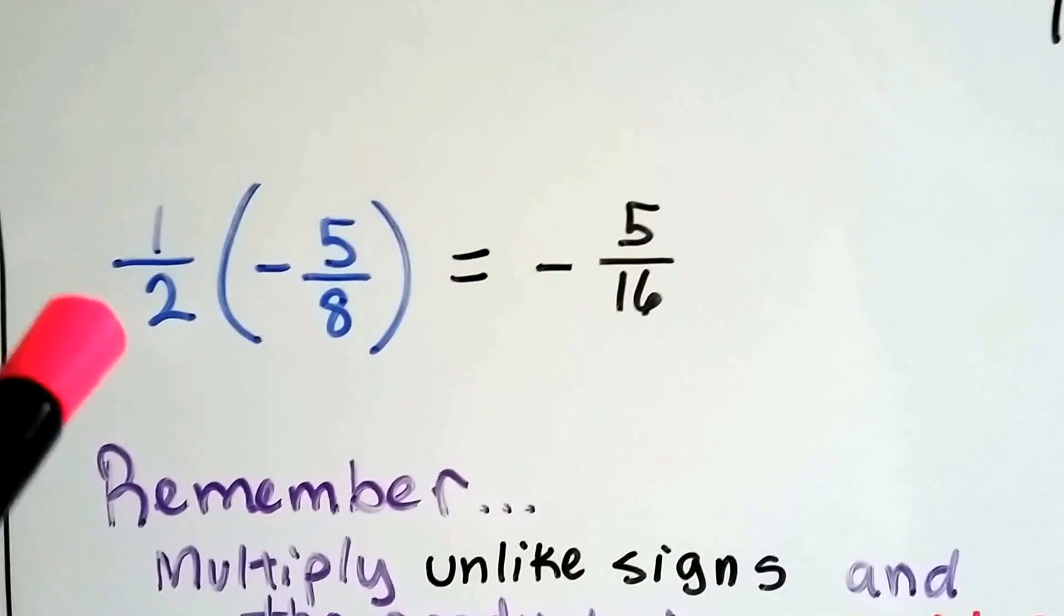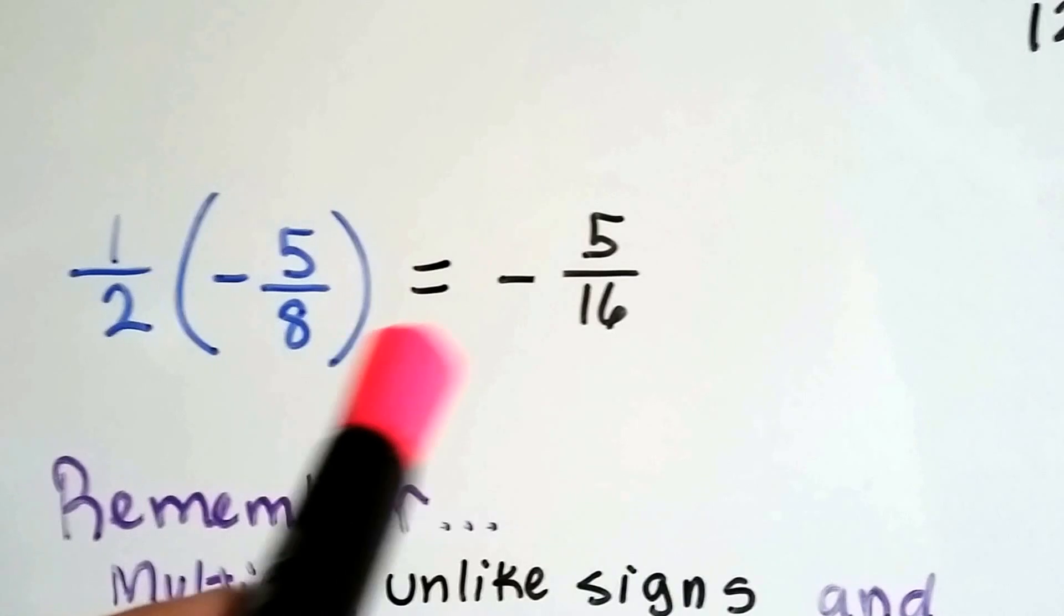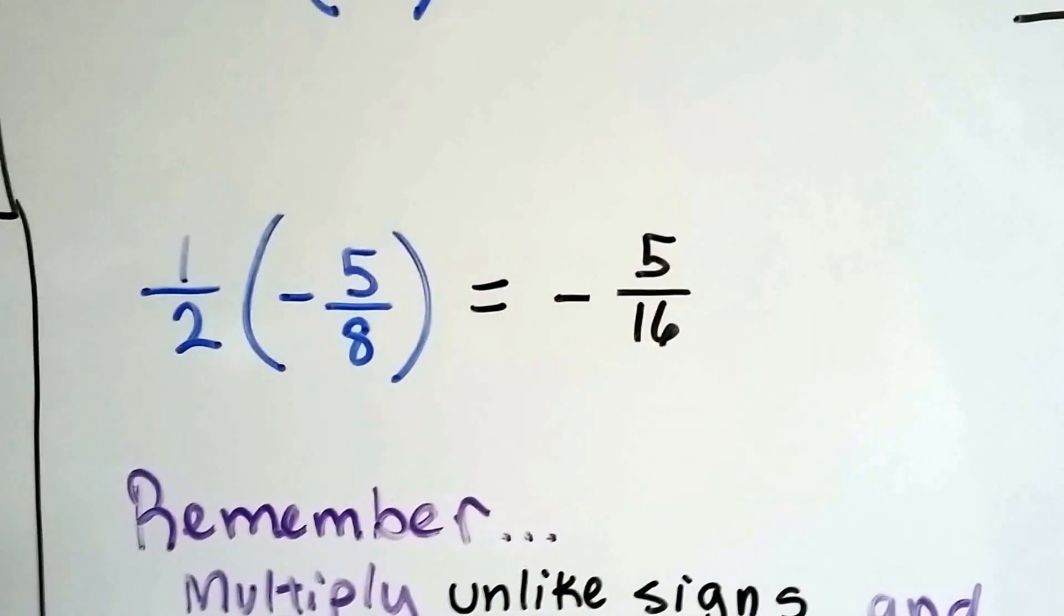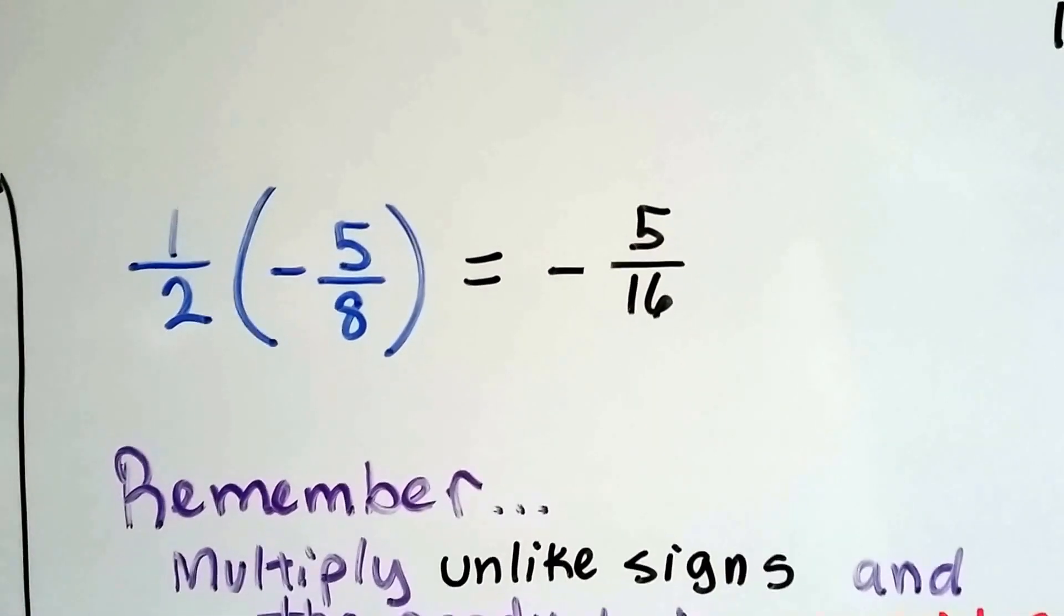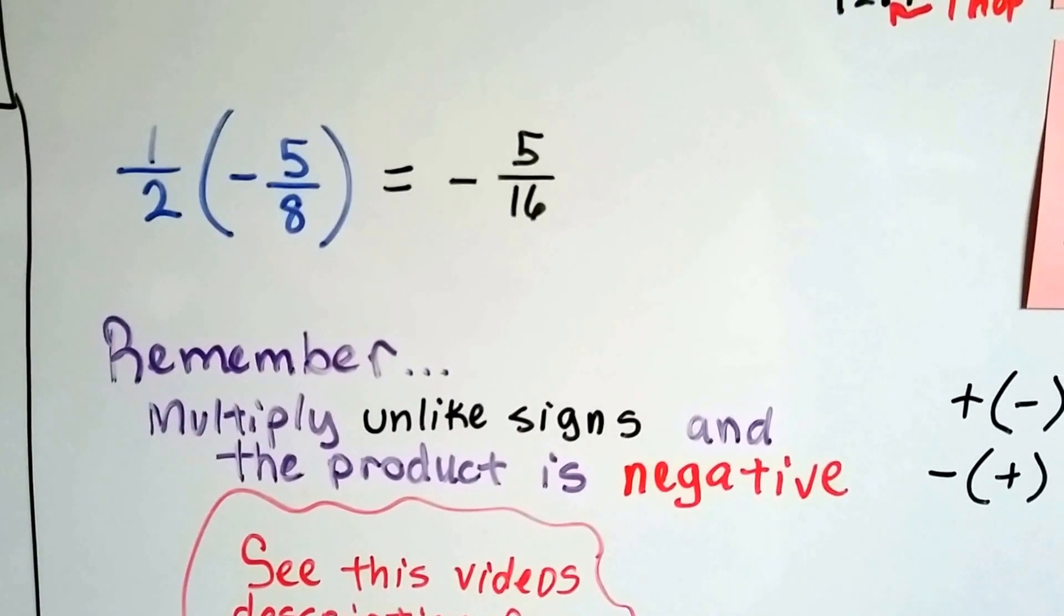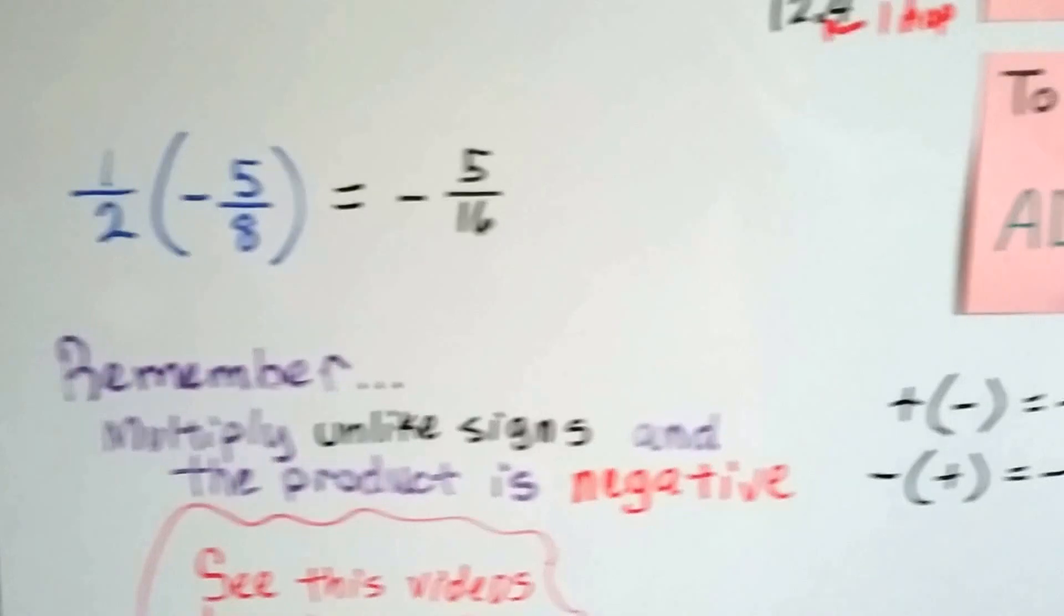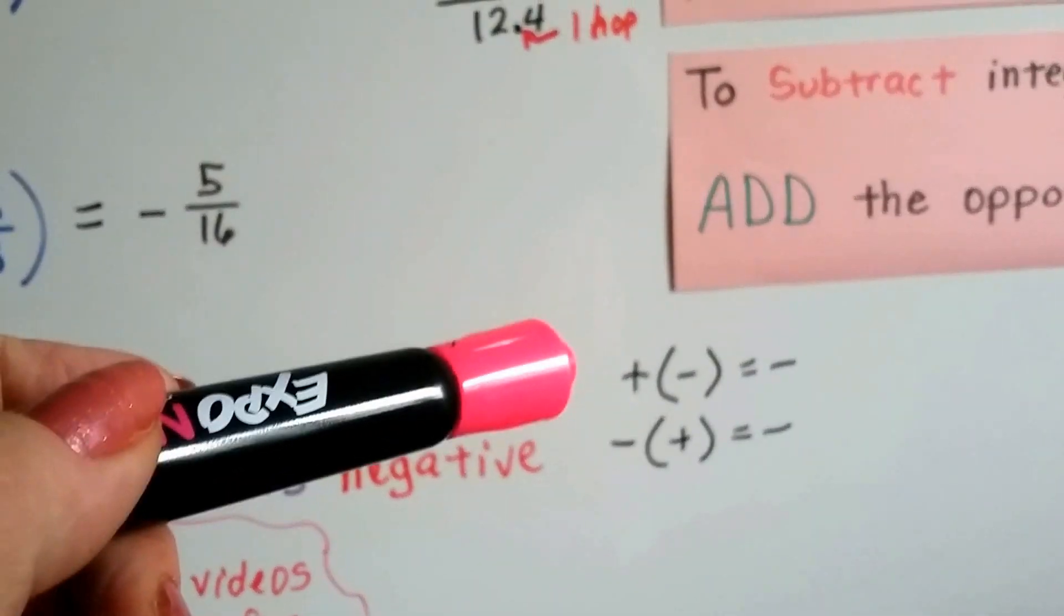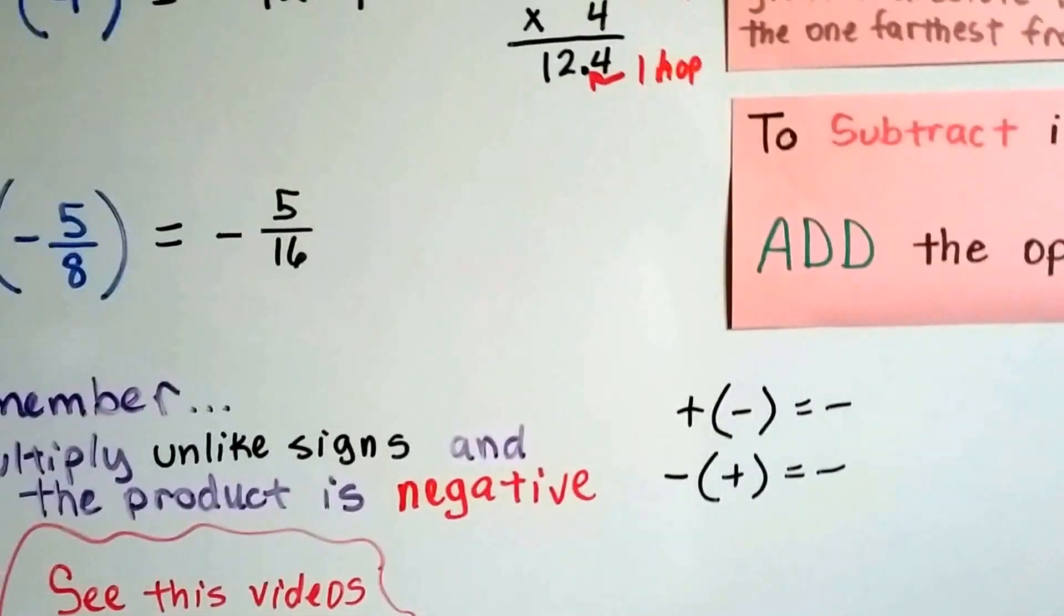And then for this one, we've got a positive half and a negative 5 eighths. We know the answer is going to be a negative because they're unlike signs, and we just multiply straight across. 1 times 5 is 5. 2 times 8 is 16. We've got negative 5 sixteenths. So just remember, when we multiply unlike signs, we're going to get a product that's negative. And it doesn't matter if the positive or negative is first. Positive to a negative or negative to a positive. Our product is going to be a negative.